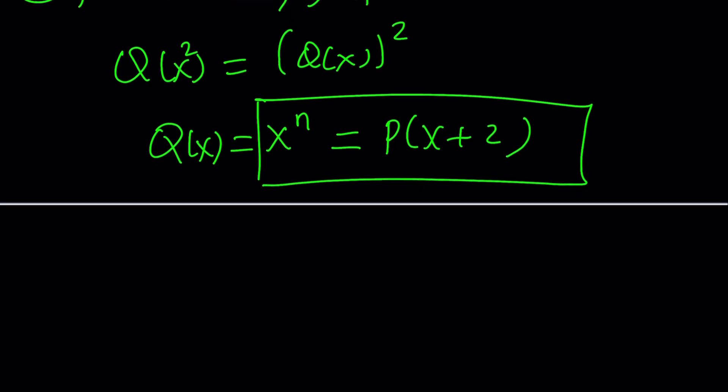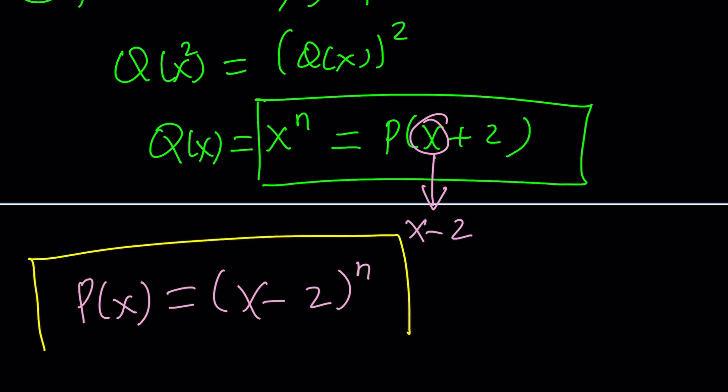Now, in this equation, again, we can do substitution, which is something we use very frequently. Replace x with x - 2 to get P(x). And P(x) is just going to be (x - 2) to the power of n. Now, what is that supposed to mean? As long as n is a natural number, this is going to work.